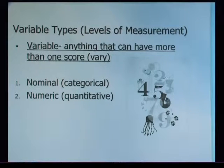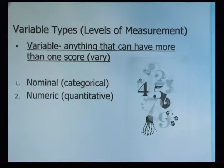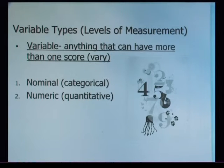Now let's move on to variable types, also called level of measurement. The types of variables we have depend on how you measure them — some variables can be measured in different ways. There are two basic types of variables: nominal and numeric.